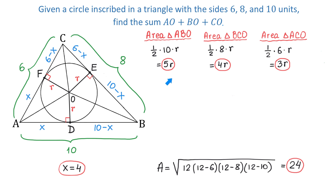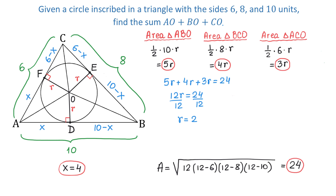We found the areas of the three individual triangles, and if we add them together we get the area of triangle ABC. So 5R plus 4R plus 3R equals 24. On the left side, 5R plus 4R plus 3R makes 12R, and 12R equals 24. Dividing both sides by 12, we get R equals 2.